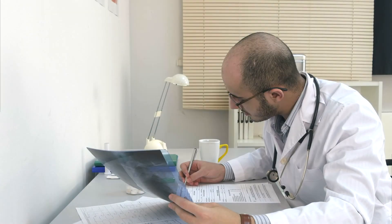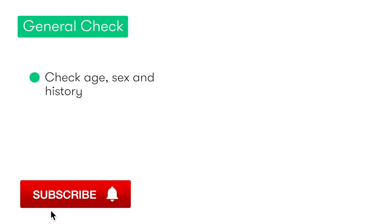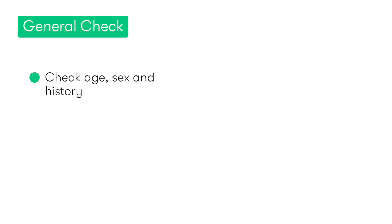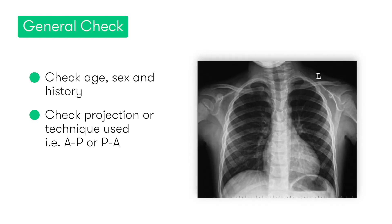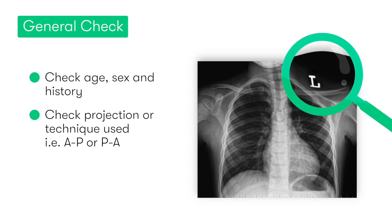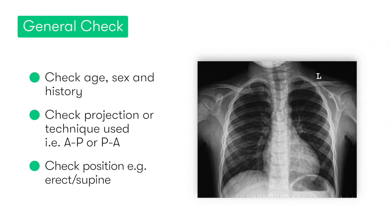For the general check, we want to clarify the patient's age, sex, and also the history of the patient — so basically what's the reason for performing the chest x-ray in the first place. Then we want to check the type of view: is it AP, PA, or lateral? And also what's the orientation — so which is the patient's left side and which is their right. All chest x-rays should come with one of these sides marked, usually the left side. The last thing in the general check is to see if this is an erect chest x-ray, or if the patient is lying flat.